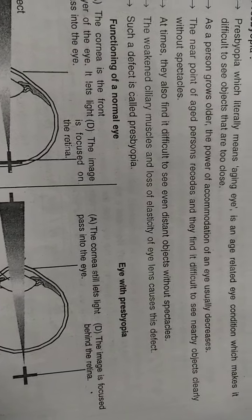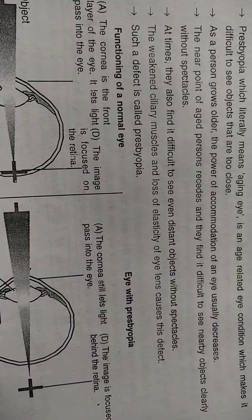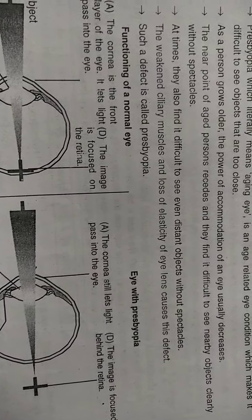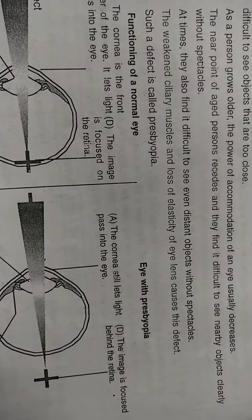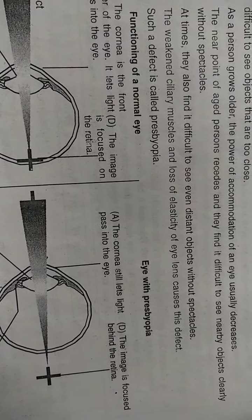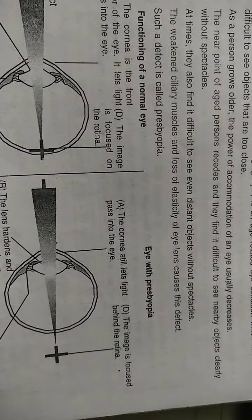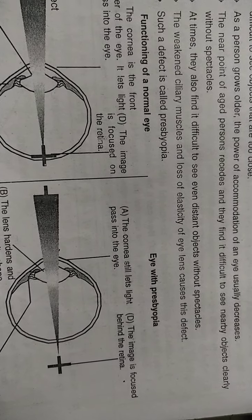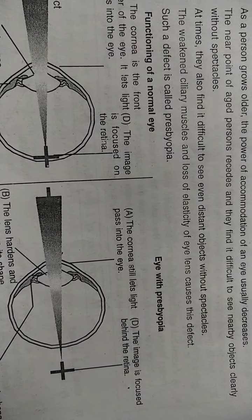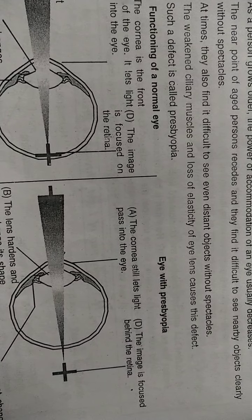The power of accommodation of eyes — we have seen earlier in this chapter that the near point is 25 centimeters. That near point decreases as the person grows older. The near point of an aged person recedes, and they find it difficult to see nearby objects clearly without spectacles.